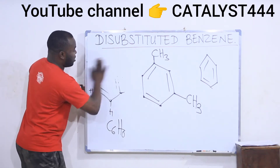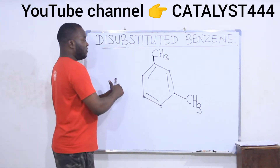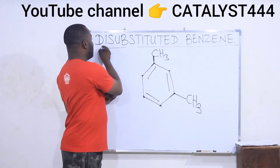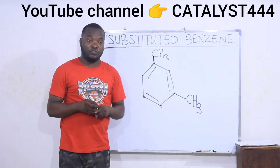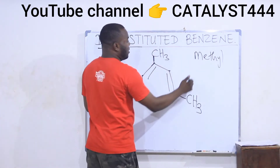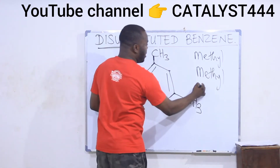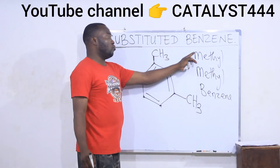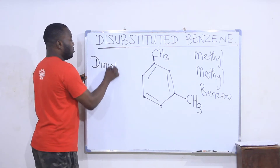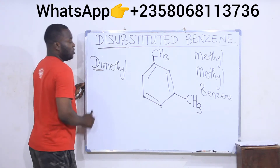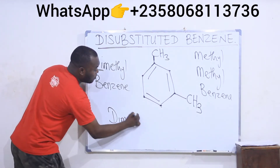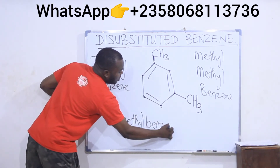This is a disubstituted benzene ring — let's see how to name this structure. This is a benzene ring having two methyl groups attached to it, therefore we call it a disubstituted benzene ring. Di means two; two groups were used to substitute hydrogens. I have two methyl groups, so I can join them together as dimethyl — methyl plus methyl gives dimethyl. So combining dimethyl and benzene, I will have it as dimethylbenzene.